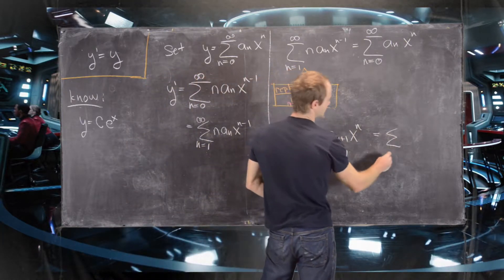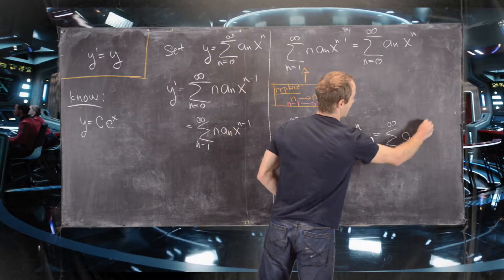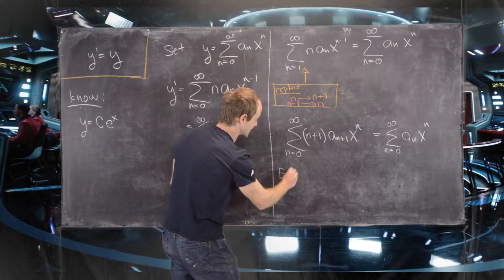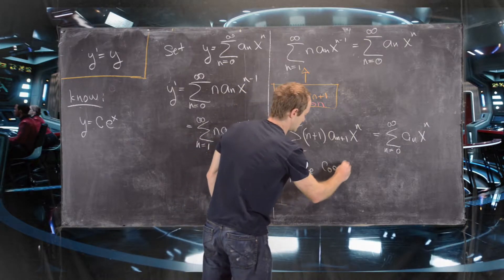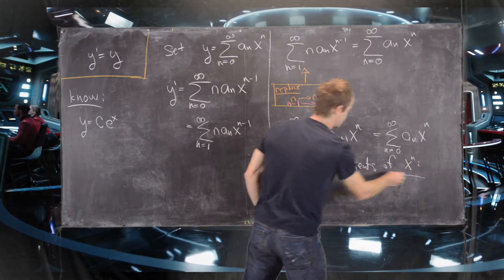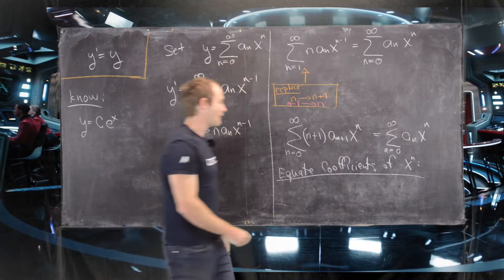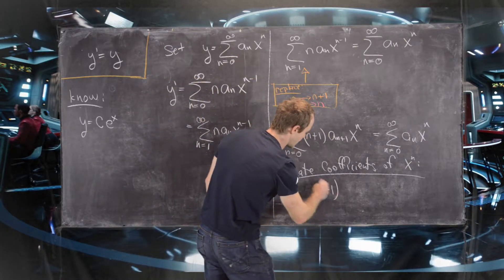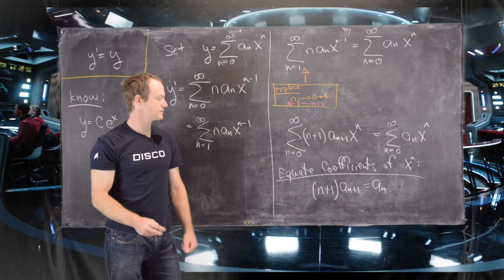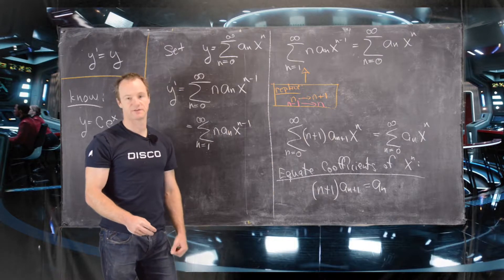After re-indexing, the left side becomes the sum n equals 0 to infinity of (n plus 1) times a sub n plus 1 times x to the n, and the right side is the sum n equals 0 to infinity of a sub n times x to the n. Now we can equate coefficients of x to the n on both sides, which gives us the equation: (n plus 1) times a sub n plus 1 equals a sub n.